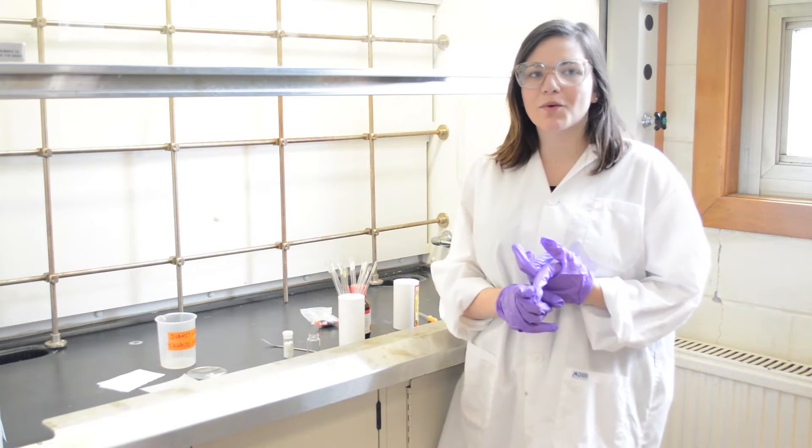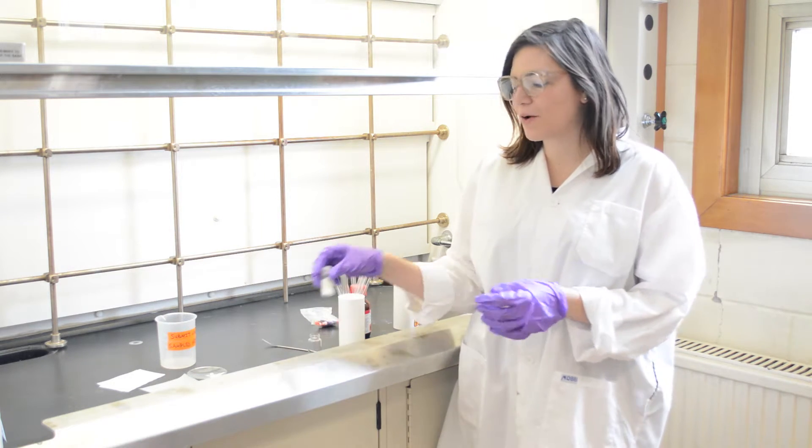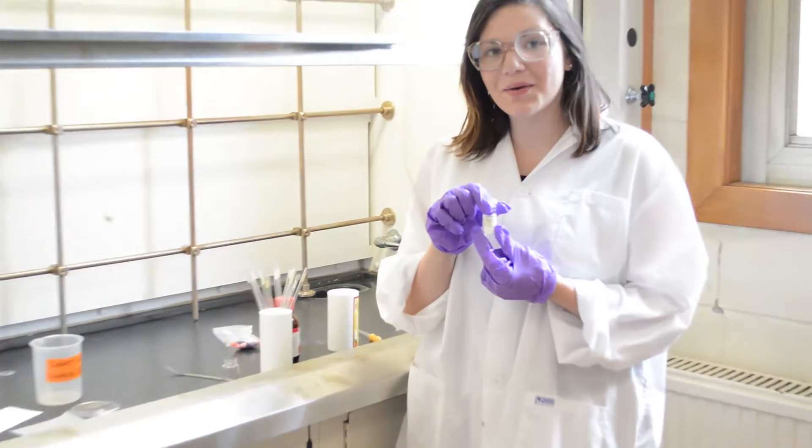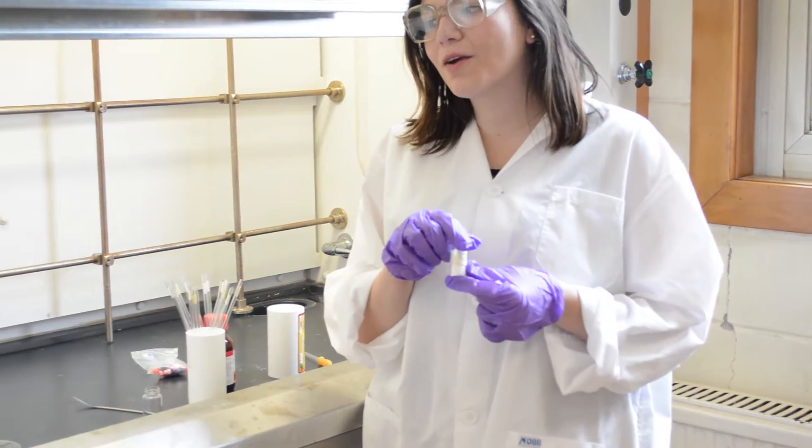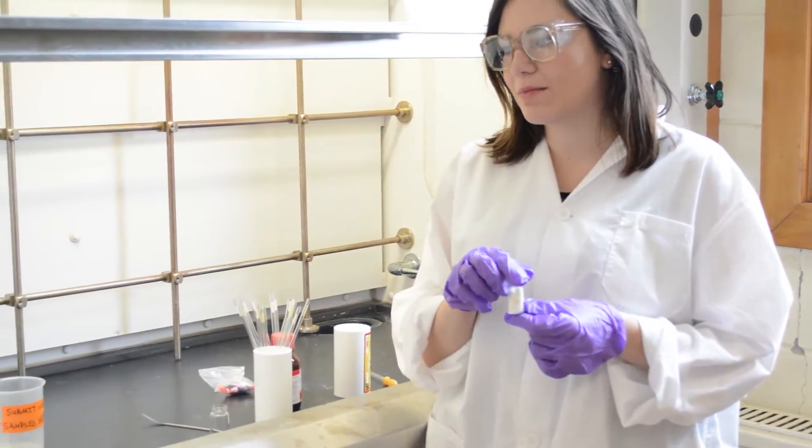For proton NMR, you're going to want to use 2 to 10 milligrams of your sample compound, and for carbon NMR, you're going to want to use 10 to 50 milligrams of that compound.